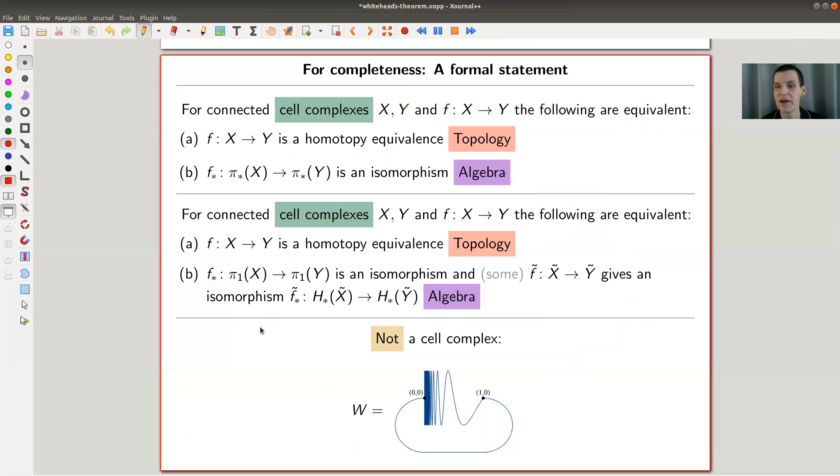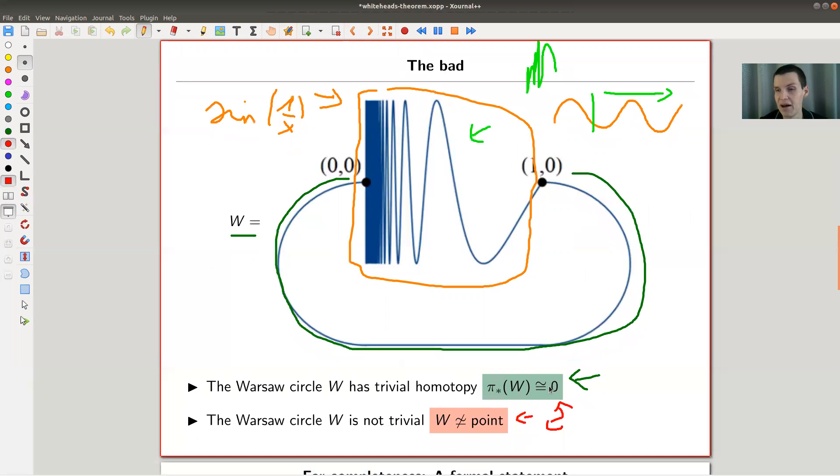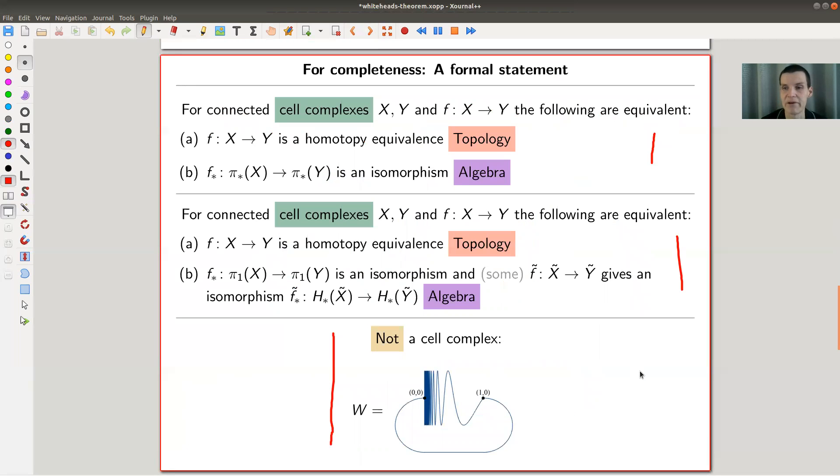But it turns out this is one of the main examples to motivate the following Whitehead theorem in the homology version downstairs, and in the homotopy version upstairs. The kind of the point will be that this one is not one of the nice spaces. So it's not a cell complex. By the way, you can prove that by hand, you shouldn't use Whitehead theorem. You can use Whitehead theorem to show that this is not a cell complex, of course, because as we will see, this is not supposed to happen for cell complexes, but you can also prove it by hand anyway.